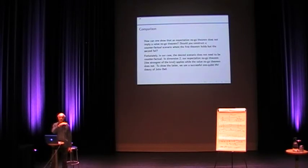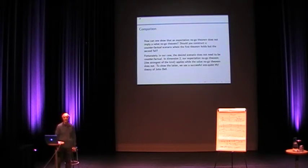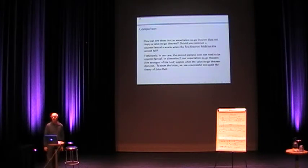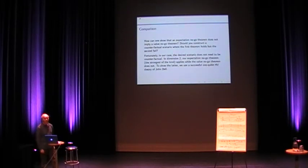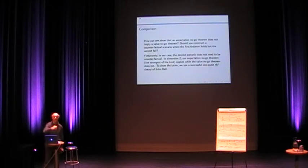So in dimension two we have the no-go theorem for the expectation approach, whereas for the value approach actually there is a hidden variable theory, a successful hidden variable theory constructed by Bell. And building on this theory we prove that no expectation no-go theorem does not imply the value no-go theorem.